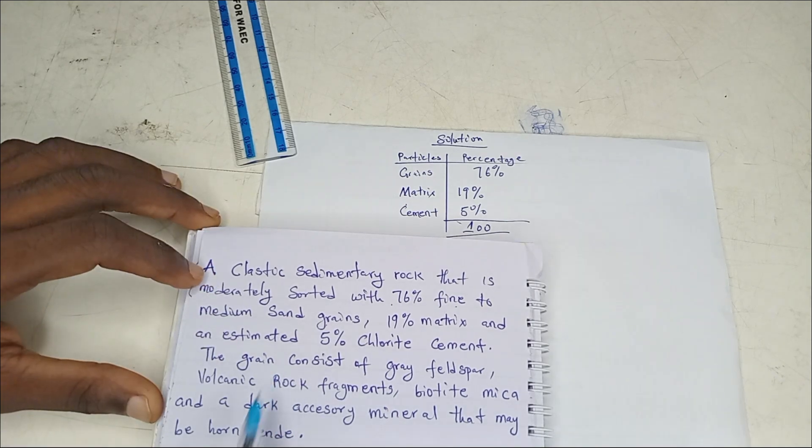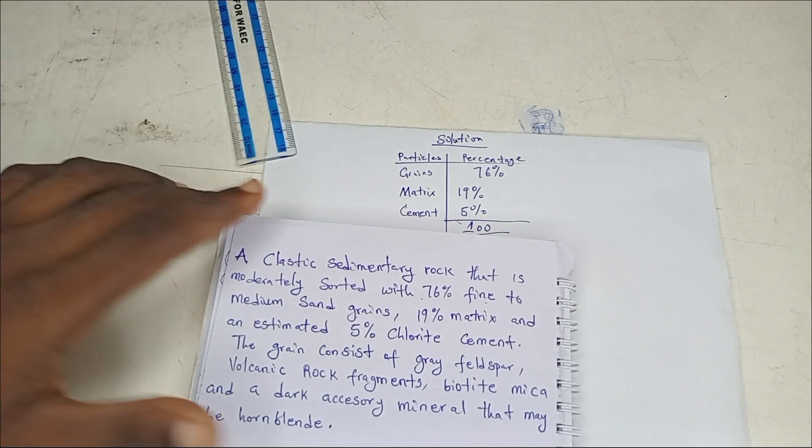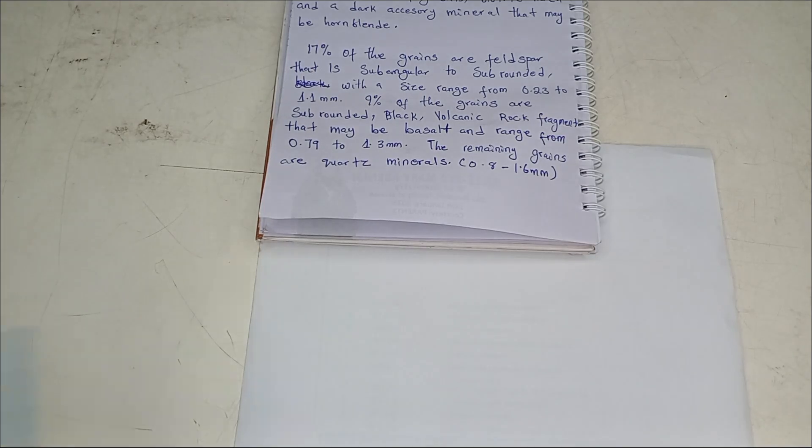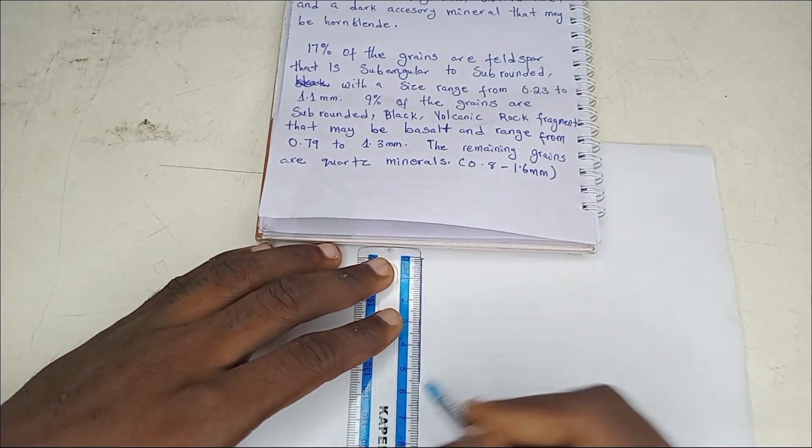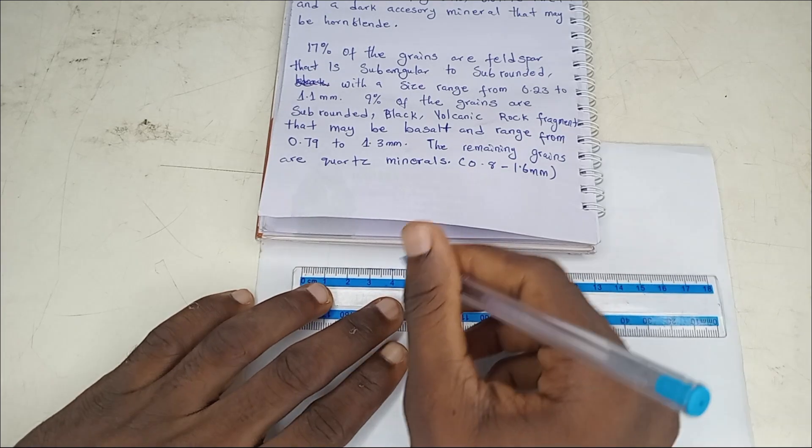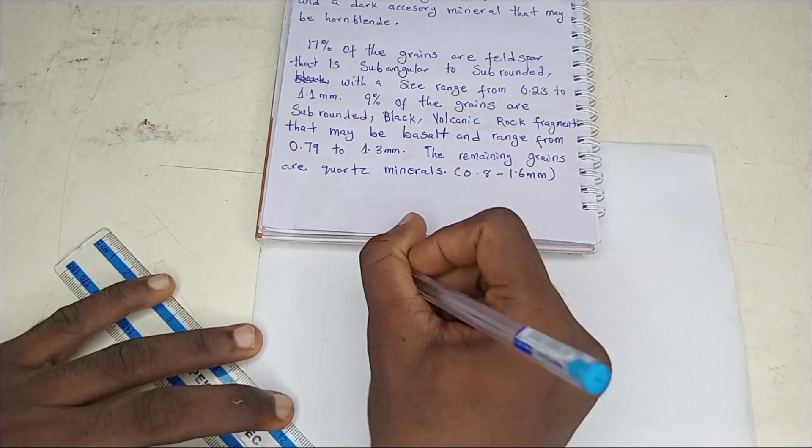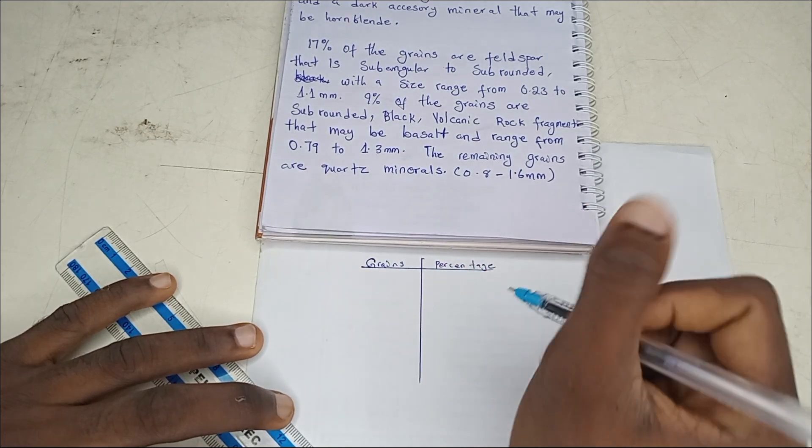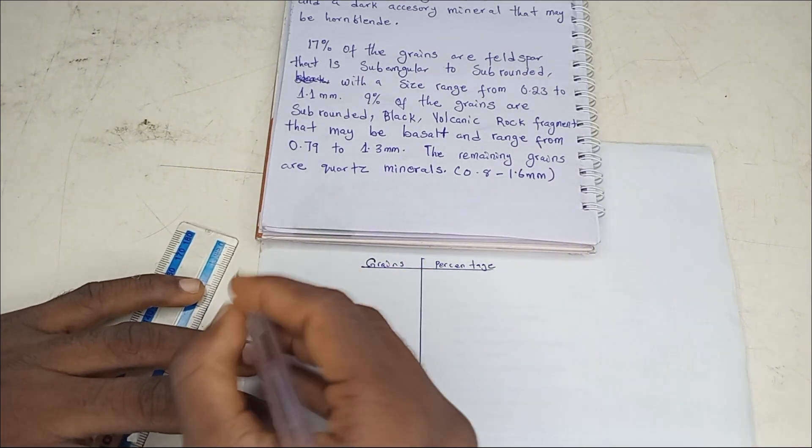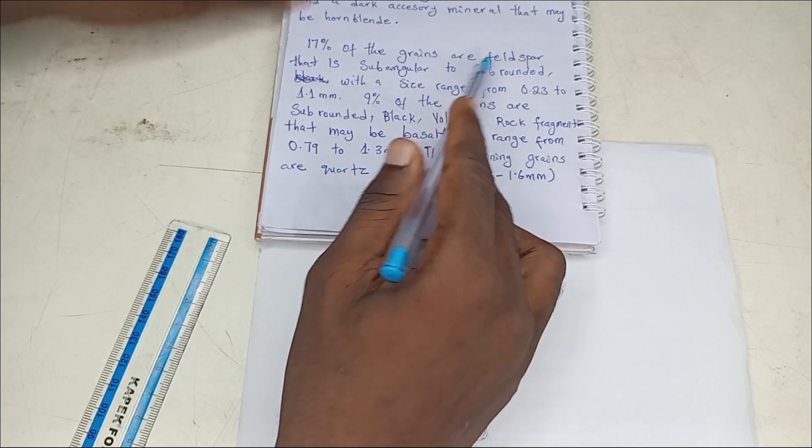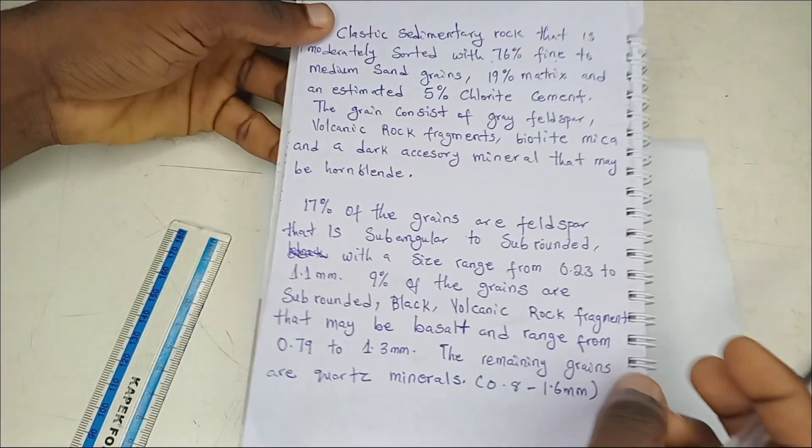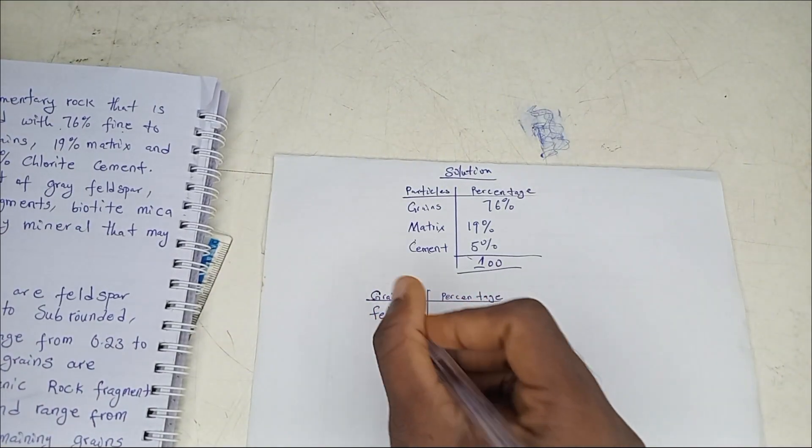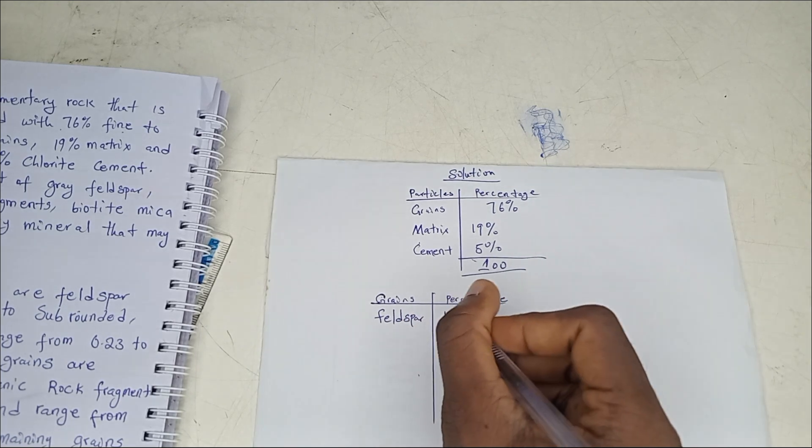Now we're going to draw a table for the grain components. Create a table with grains and their percentages. 17% of the grains are feldspar.